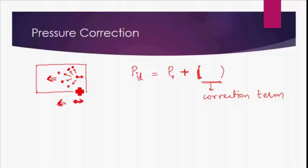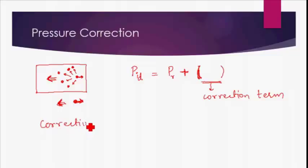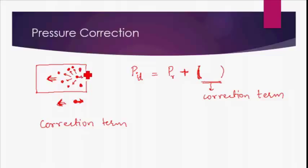We know why that is so — it is because of the presence of forces of attraction. What we need to do is find this correction term. The correction term is somewhat complicated, so pay close attention. It is going to depend on the number of molecules which are actually colliding with the wall. The pressure depends on the number of collisions taking place, and the number of collisions depends on the density of molecules — that is, the number of molecules per unit volume.